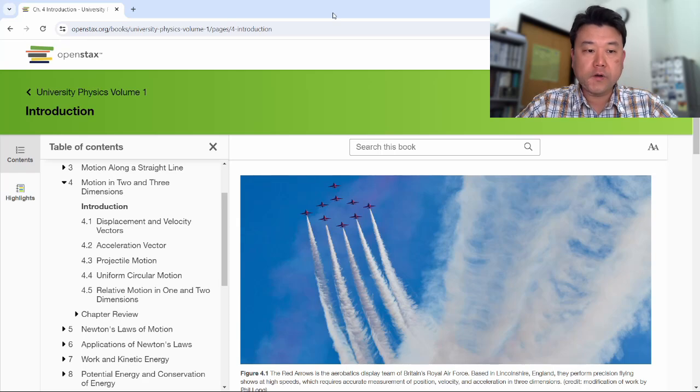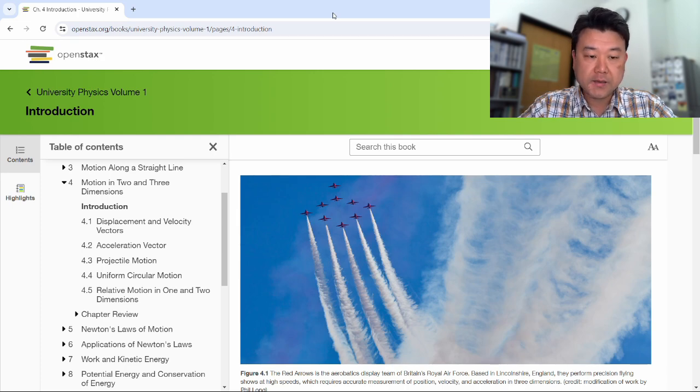Hi, this is the overview video for Chapter 4, Motion in Two and Three Dimensions. This is the second chapter in kinematics. In Chapter 3, we covered kinematics formulas in 1D. And in this chapter, we bring in additional dimensions.